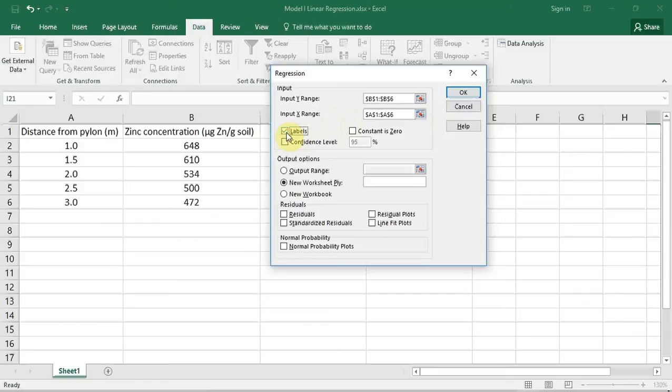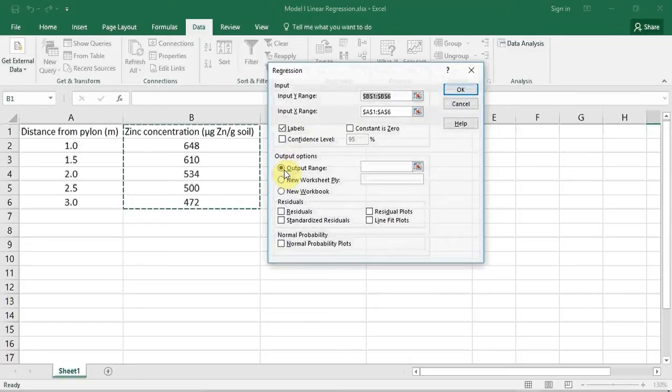I also need to tell it where to put the results. In this case, I am going to have it on the same spreadsheet, so I am going to press the radio button called Output Range. I now need to select where the data output is going to start from.